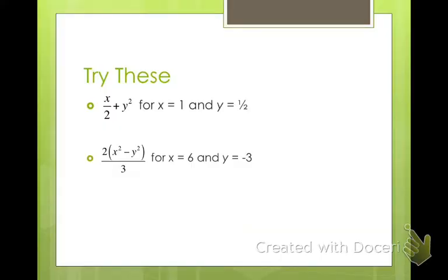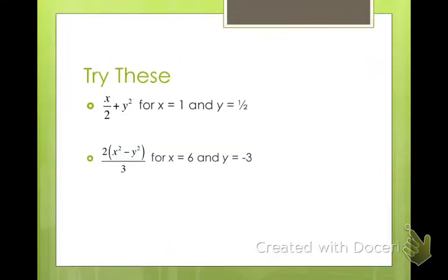Moving right along, I want you to go ahead and pause the video. Try each of these. See what you come up with. All right, when I got these, I got 0.75 for my first answer and I got 18 for my second answer. If you didn't get those, go back and check over your work, see what you might have done wrong. Then ask your partner when you get to lesson check time if you still didn't figure out what you did.